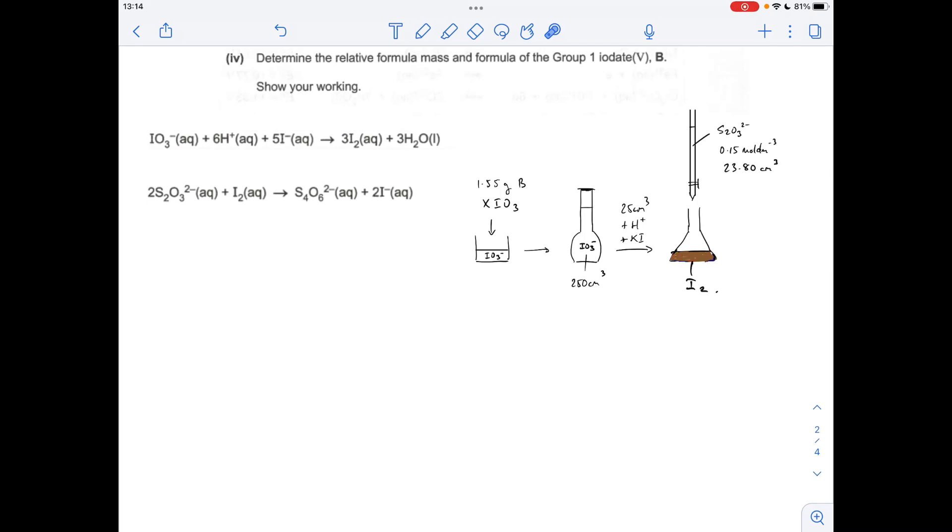The iodine produced is estimated by titration with sodium thiosulfate of that concentration, and that was the mean titre we calculated at the top of the question.